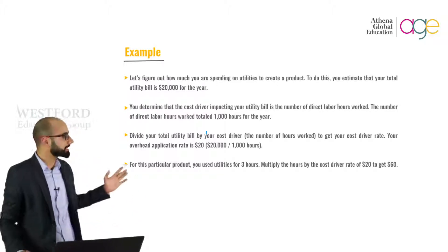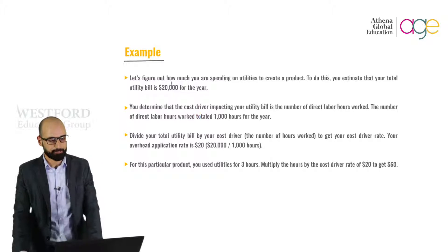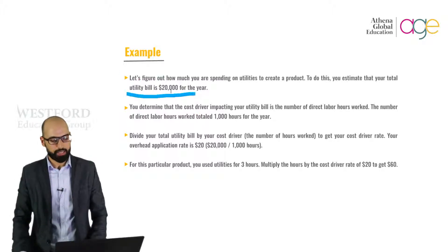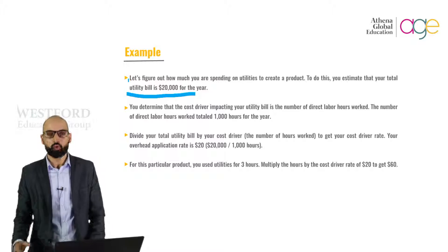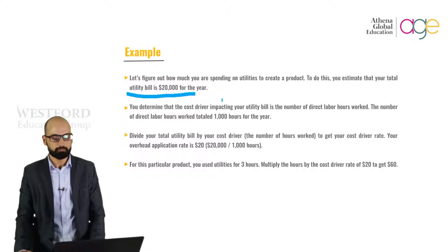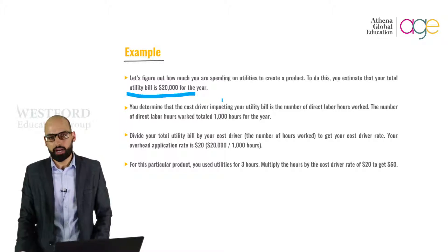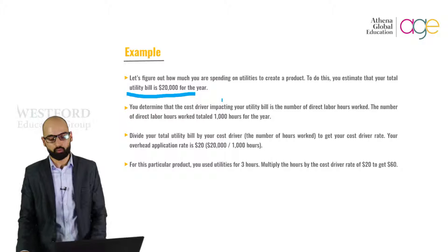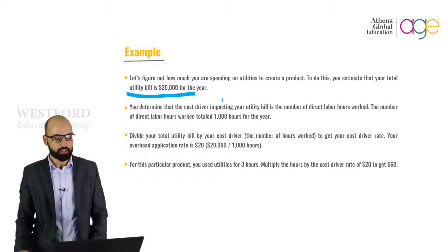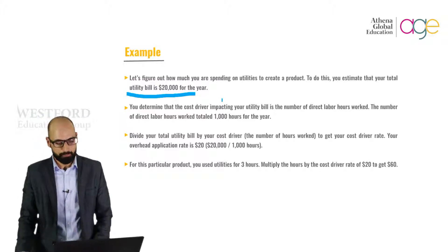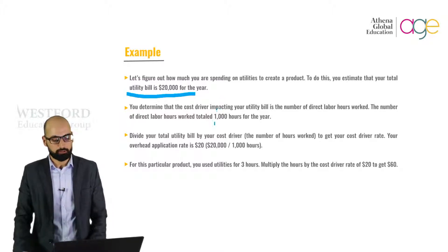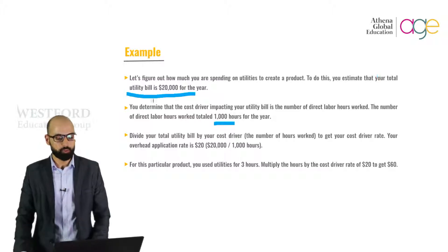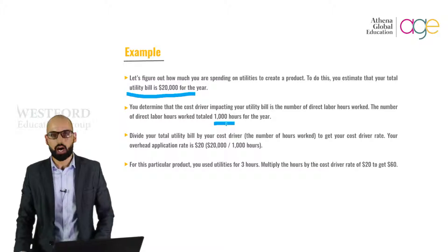Let's take an example to find out how ABC costing works. To figure out how much you are spending on utilities to create a product, you first estimate your total utility bill, which is $20,000 for the year. You determine that the cost driver impacting your utility bill is the number of direct labor hours worked. The number of direct labor hours worked is 1,000 hours for the year.